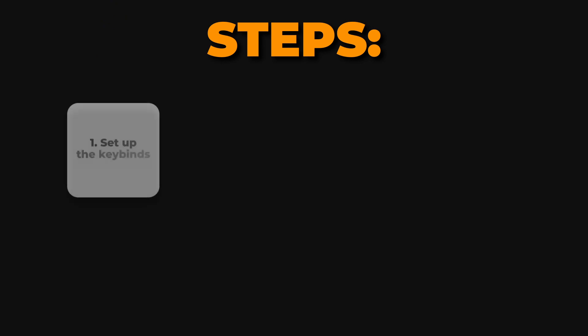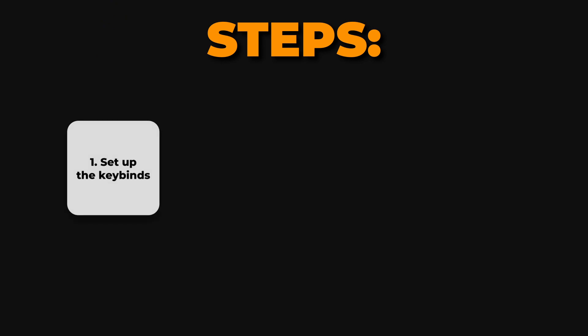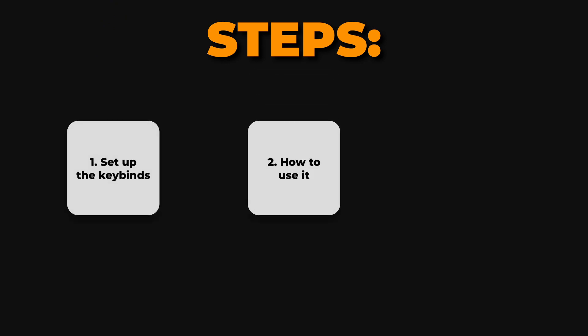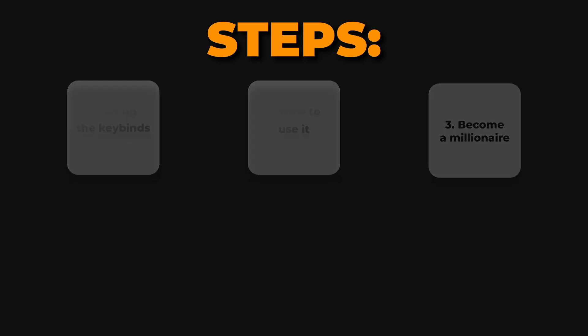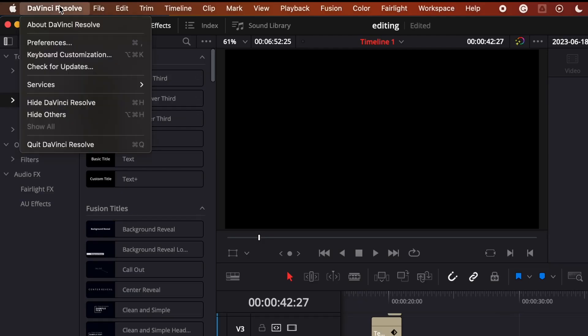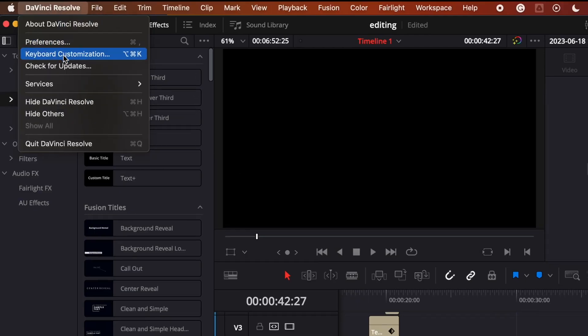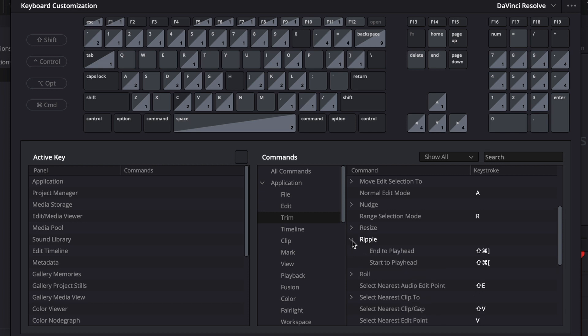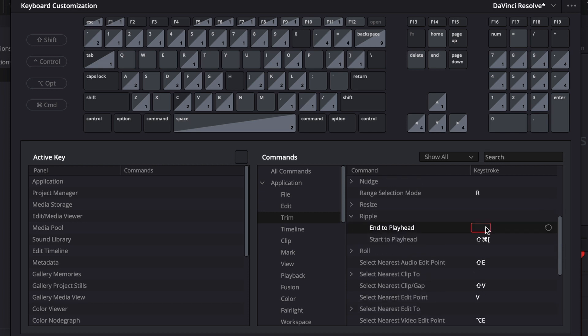First, let's set up the keybinds, and then I will show you how to use them step by step. Go to DaVinci Resolve keyboard customization, then choose Trim and search for Ripple. For Ripple End to Playhead, set W.